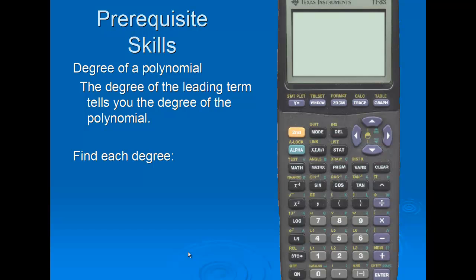Pre-requisite skills. Let's look at the degree of a polynomial. The degree of the leading term tells you the degree of the polynomial. Let's find the degree in each one of the following. For 5x plus 2, our variable is x. The x has a power that's understood to be raised to the first. Therefore, the degree is 1.